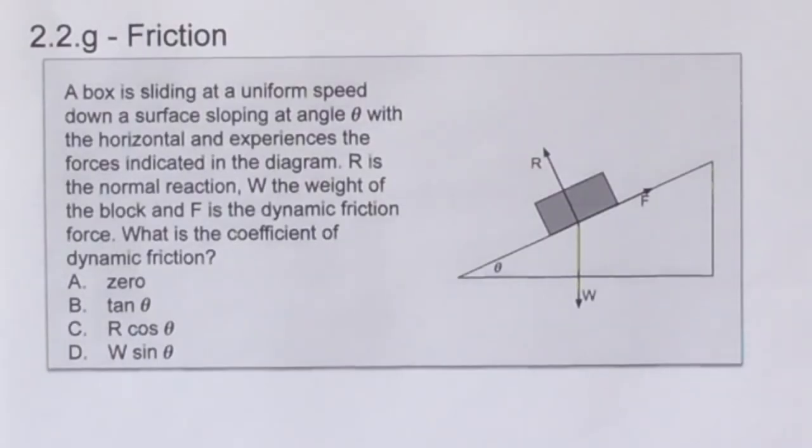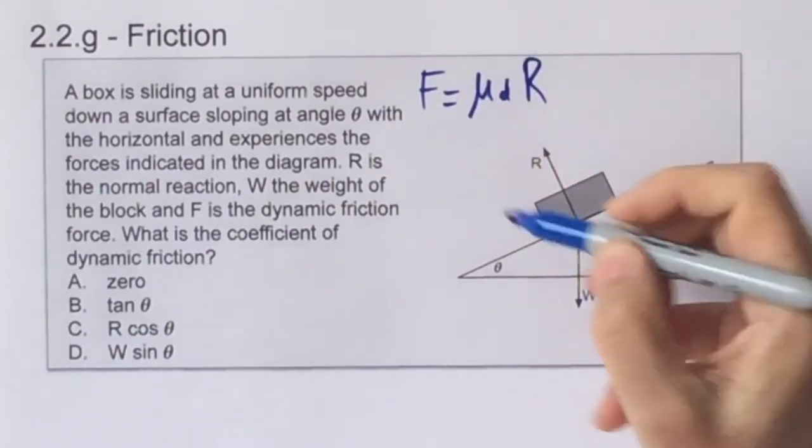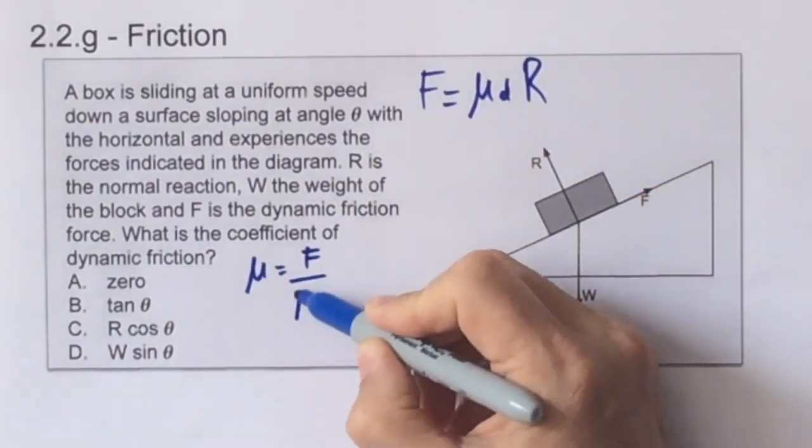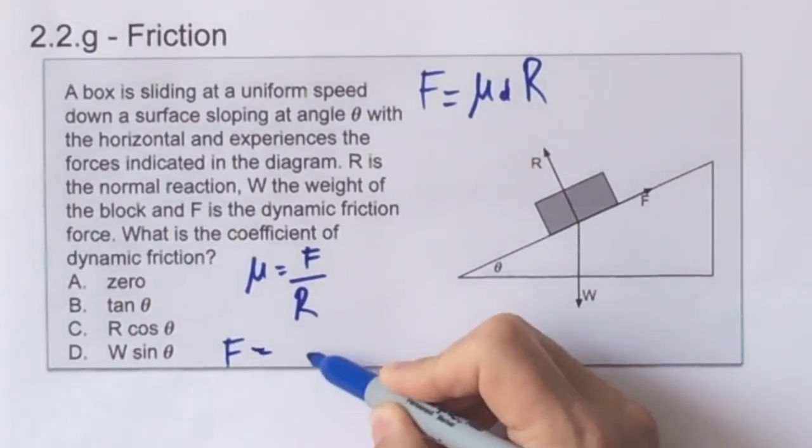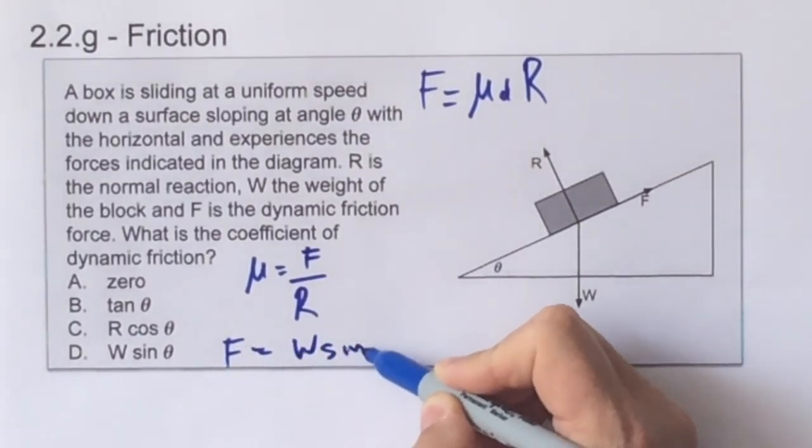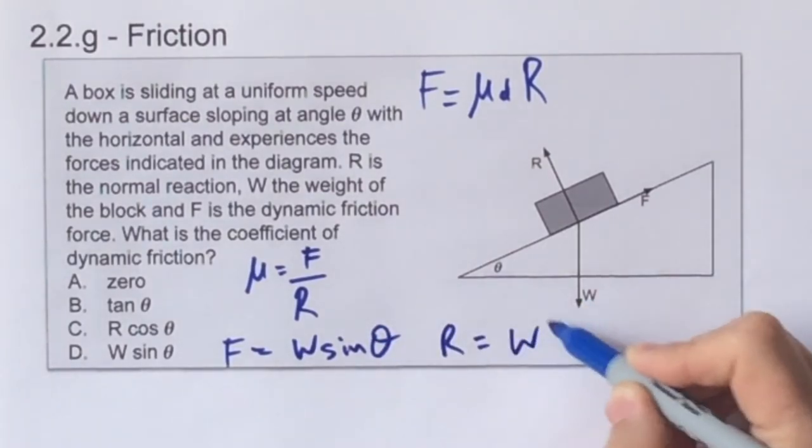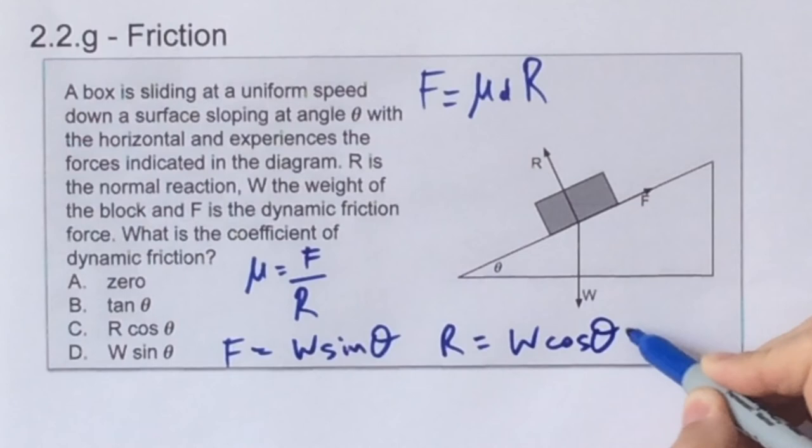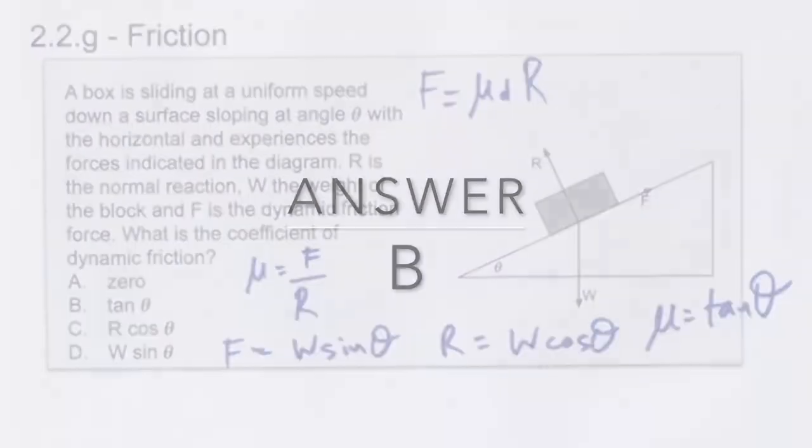This situation is dynamic so we know that the frictional formula is mu D times R, which we can rearrange and then we need to find a formula for F and R. F equals W sine theta as the forces parallel to the slope, and R equals W cos theta, which is the forces perpendicular to the slope. When we divide those two, we find that it's sine divided by cos, and you should know that sine divided by cos is tangent, and therefore the answer is B.